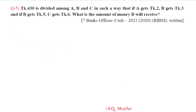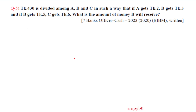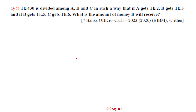Question number 5: Taka 430 is divided among A, B and C in such a way that if A gets taka 2, B gets taka 3; and if B gets taka 5, C gets taka 6. What is the amount of money B will receive?